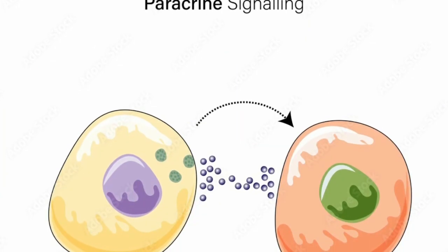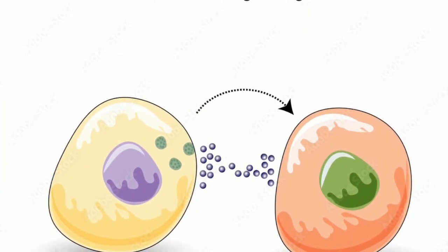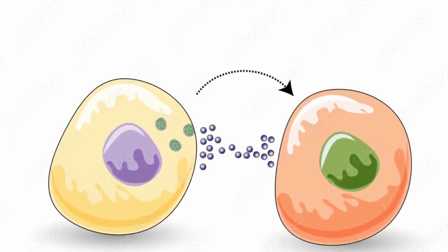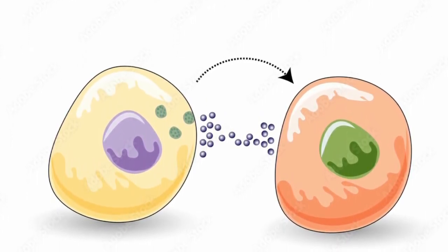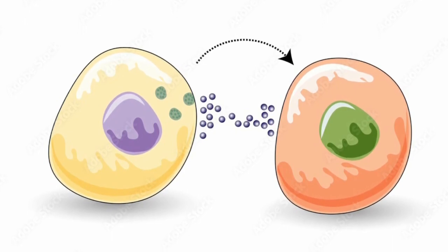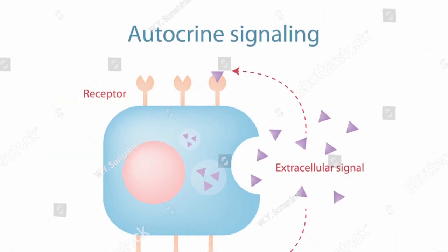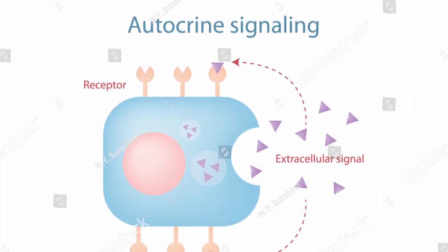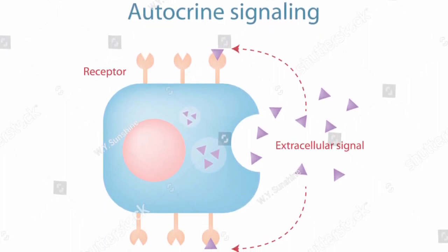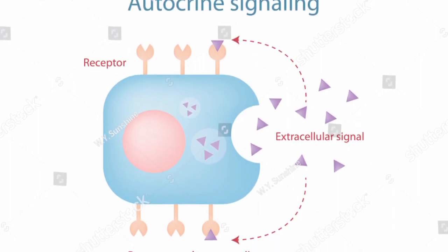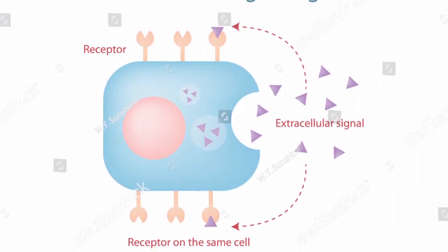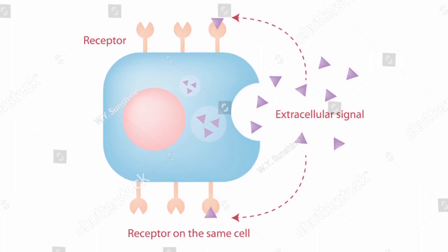Paracrine signaling involves cells releasing signaling molecules that affect nearby target cells. These signaling molecules have a localized impact and are often important in tissue growth and repair. In autocrine signaling, cells release signaling molecules that bind to receptors on their own surface, affecting their own behavior — important in processes like immune responses.